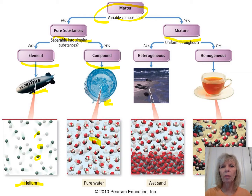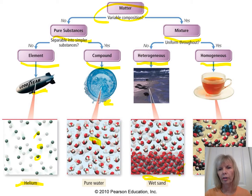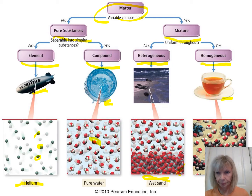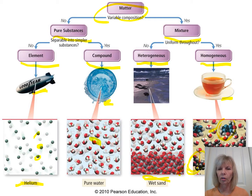Mixtures can be classified as heterogeneous or homogeneous. Heterogeneous means they don't look the same throughout — for example, wet sand, a mixture of sand and water. A cup of tea is an example of a homogeneous mixture. Tea contains molecules like caffeine and water, and may also include sugar — all pure substances. When those pure substances are mixed together, we get a mixture.